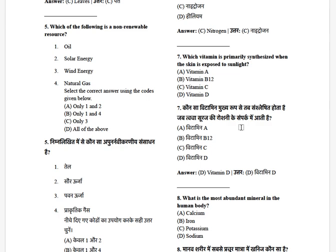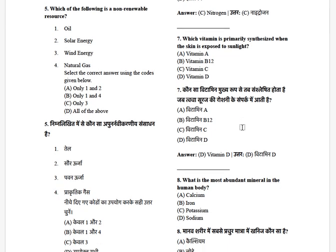Which of the following is a non-renewable resource? The options are: oil, solar energy, wind energy, and natural gas. The answer is only options one and four — that is oil and natural gas.